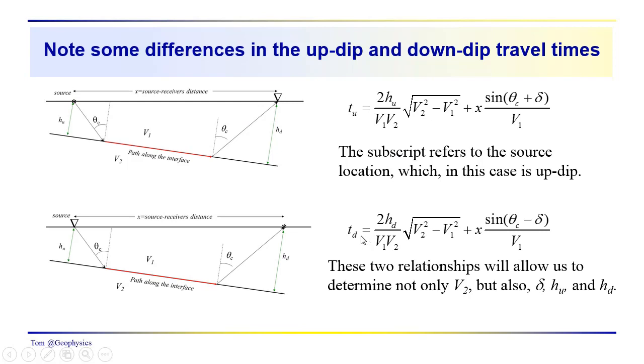Likewise, we have an expression for the down-dip time-distance relationship. Notice that we have a sign change here in the argument for the sine. Theta critical minus delta instead of theta critical plus delta. And if we collect data from both the up-dip and the down-dip direction, we are going to get information that is going to allow us to determine V2, the dip, the thickness up-dip, the thickness down-dip. But again, only if these profiles are perpendicular to strike. So there's another assumption that we have to make.